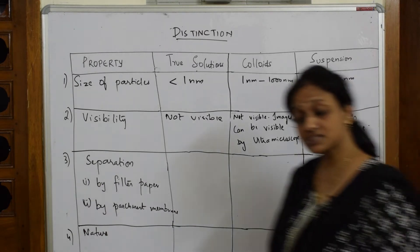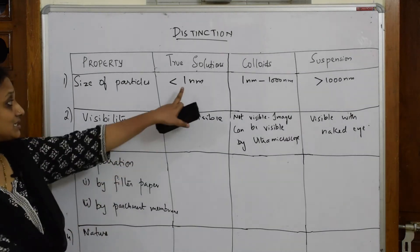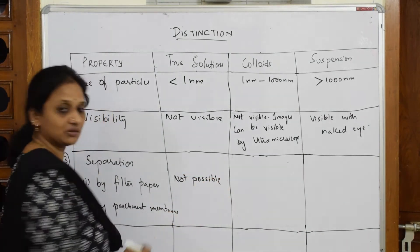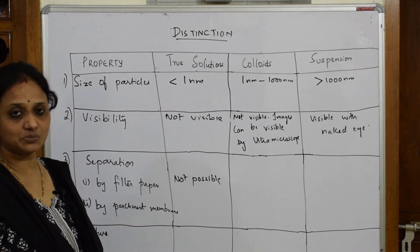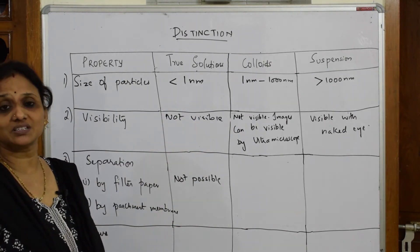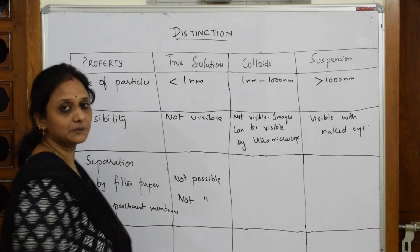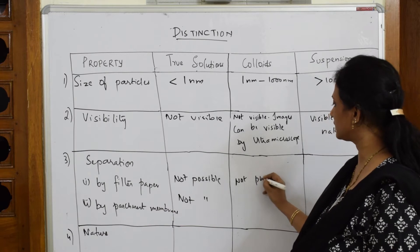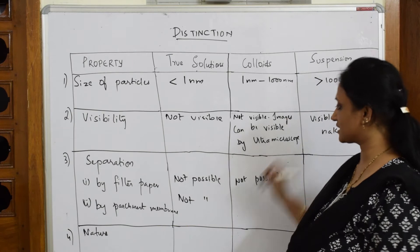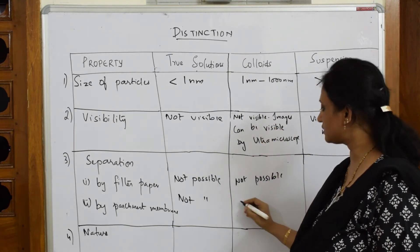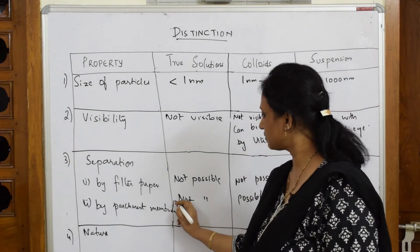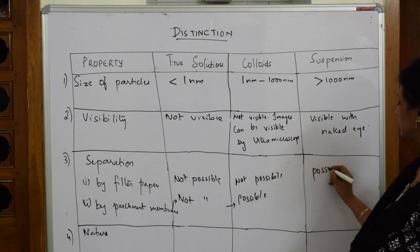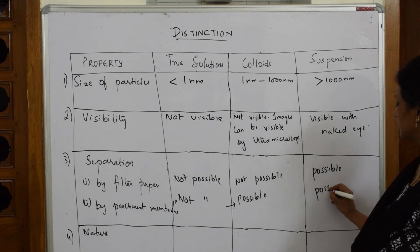For separation/filtration: true solutions cannot be separated by filter paper, and also not possible through parchment or animal membrane because the particle size of 1 nanometer is too small. For colloids, filtration by normal filter paper is not possible, but filtration through parchment membrane is possible since particle size ranges from 1 to 1000 nanometers. For suspensions, both filter paper and parchment membrane filtration are possible.